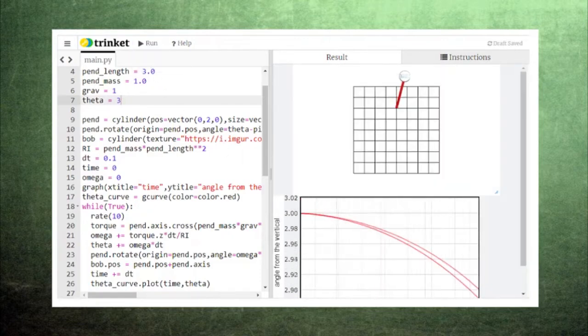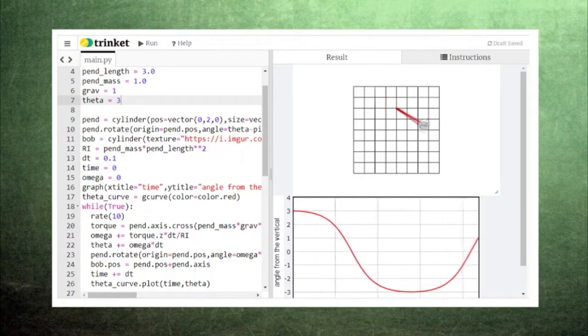However, if you start the pendulum higher, the peaks and troughs of the graph prove to be too broad to be a match for a cosine curve.